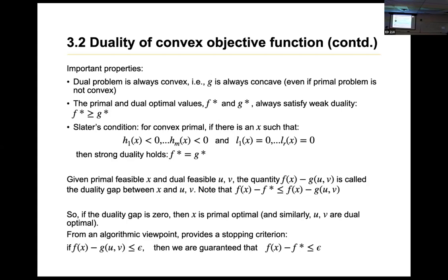After recursively solving for x: if the Slater condition doesn't hold, you still have weak duality. The Slater condition only applies for strong duality, not weak duality. So if this condition is satisfied, you can get an optimal solution — that's the key point of the Slater condition.